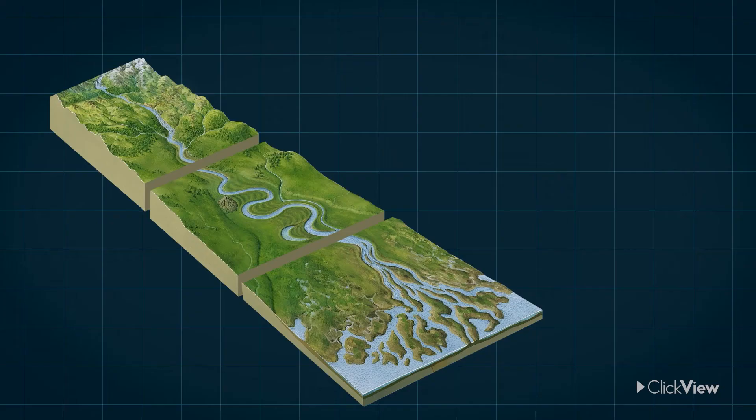The course of a river can be divided into three parts: the upper, middle and lower courses.